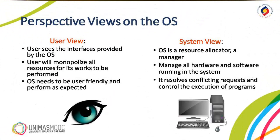As it is an interface between two different components, the OS can be viewed in two different perspectives: user view and system view. From the user view, the user sees the interfaces provided by the OS and can manipulate all resources for work to be performed through the OS. So the OS needs to be user-friendly and perform as expected. From the system view, the OS is a resource allocator — a manager that manages all hardware and software running in the system. The OS is also expected to resolve conflicting requests and control the execution of computer programs.